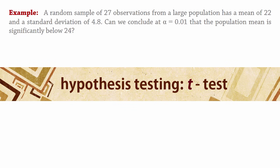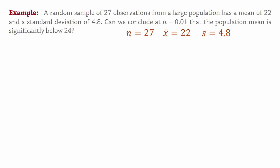Welcome. A random sample of 27 observations from a large population has a mean of 22 and a standard deviation of 4.8. Can we conclude at alpha equals 0.01 that the population mean is significantly below 24?